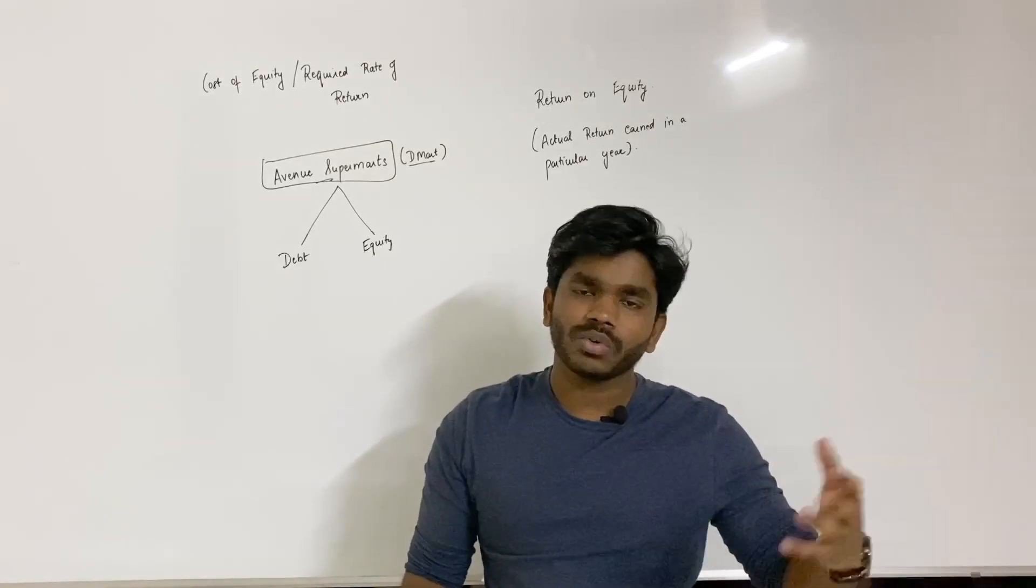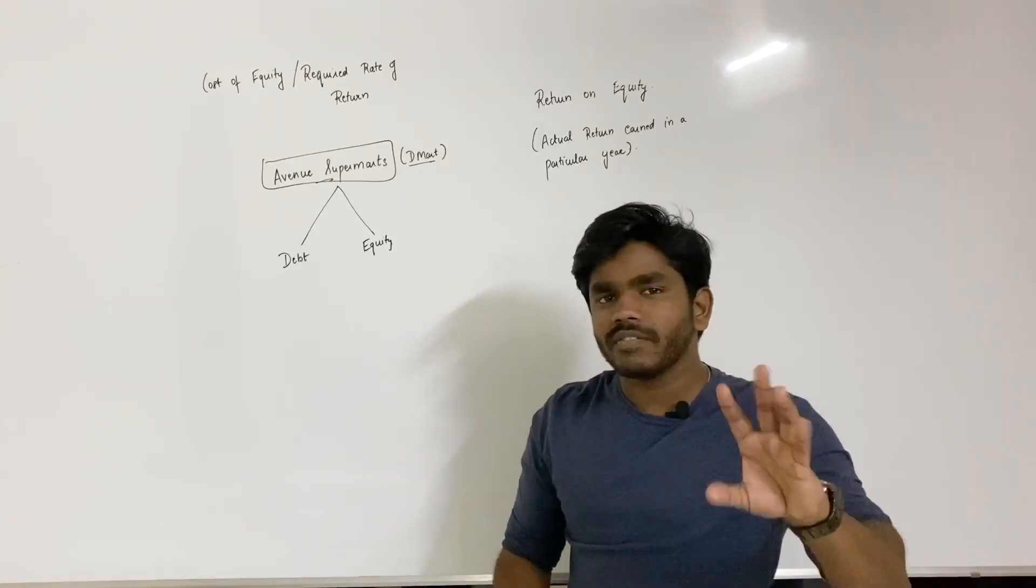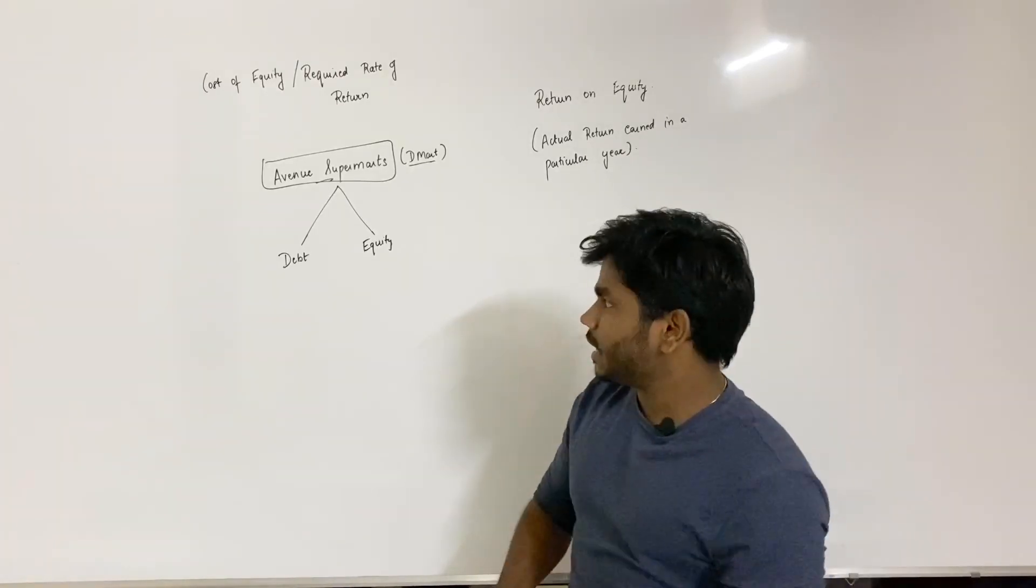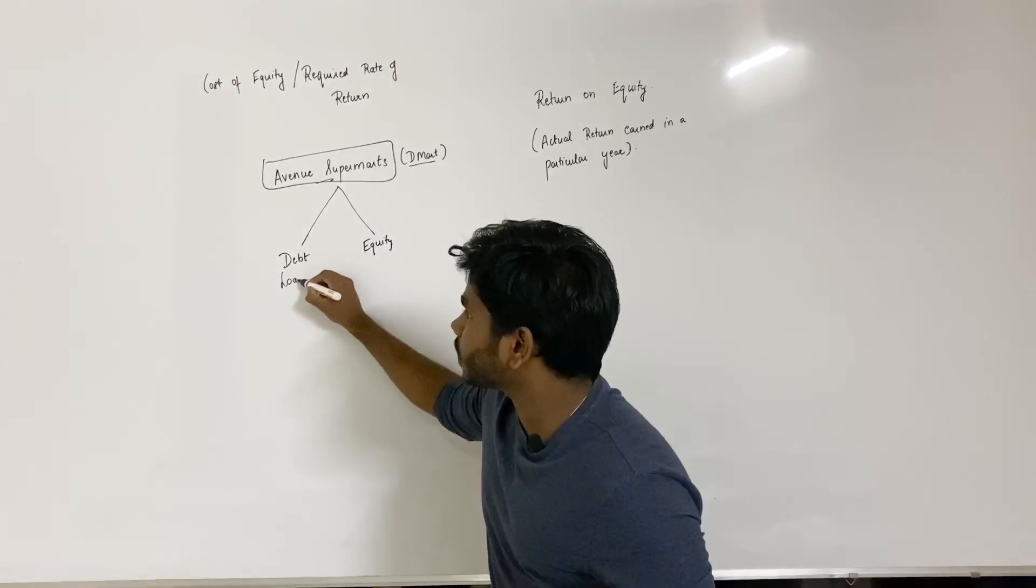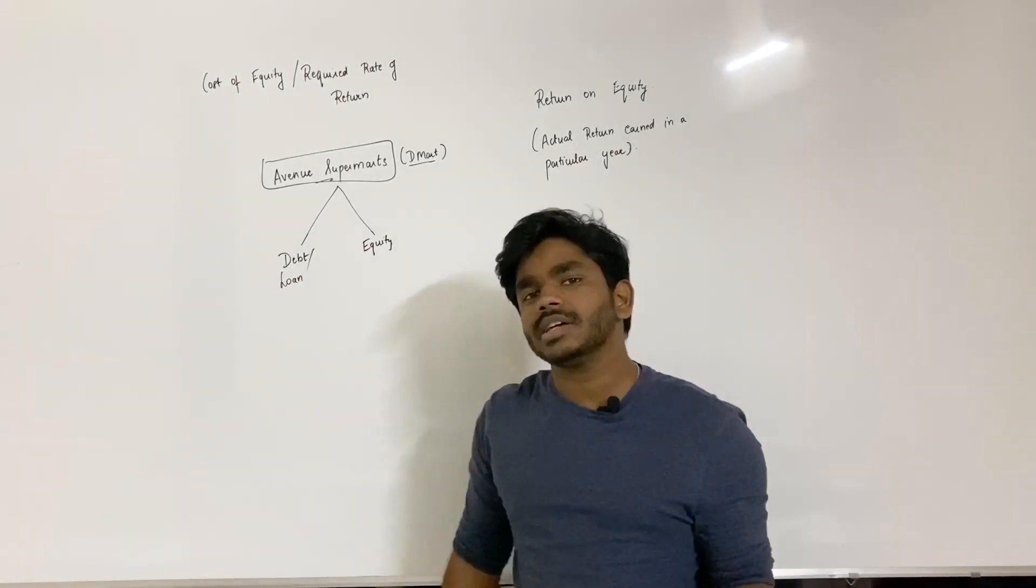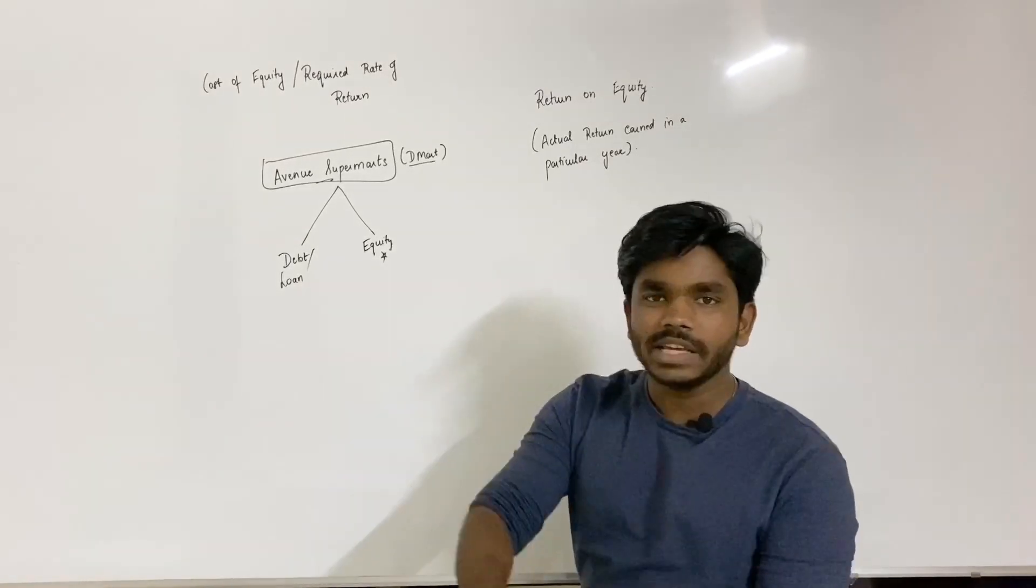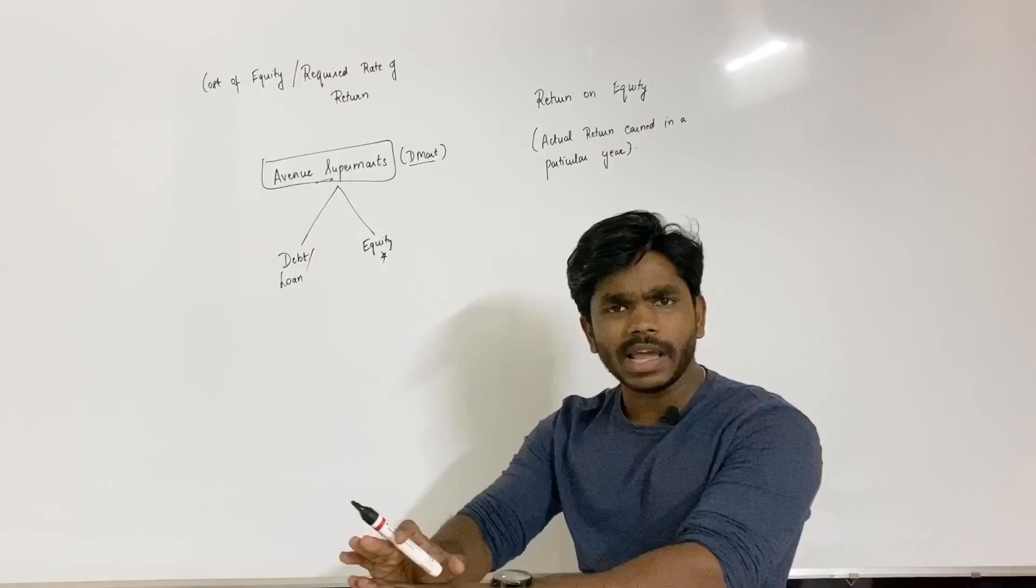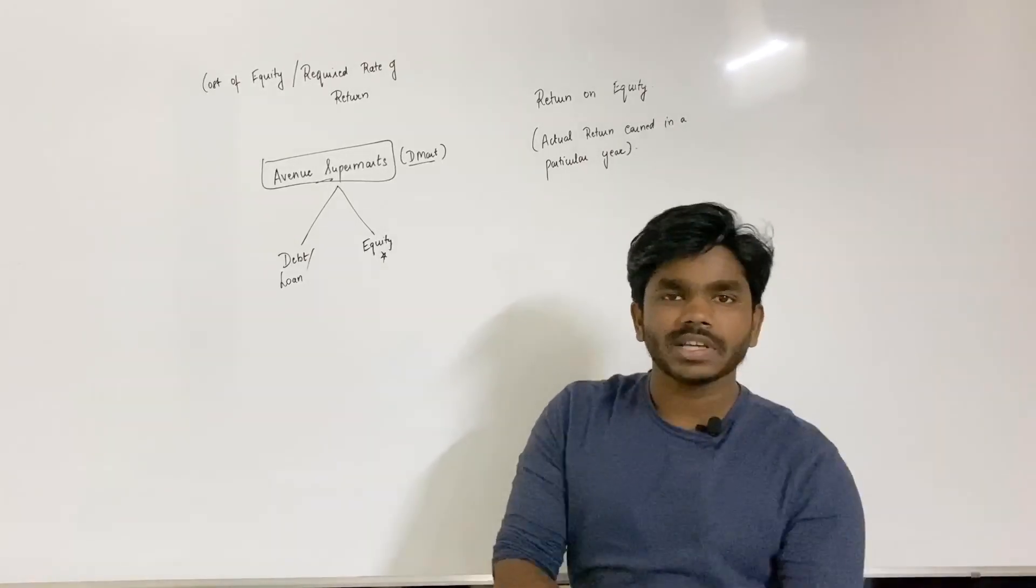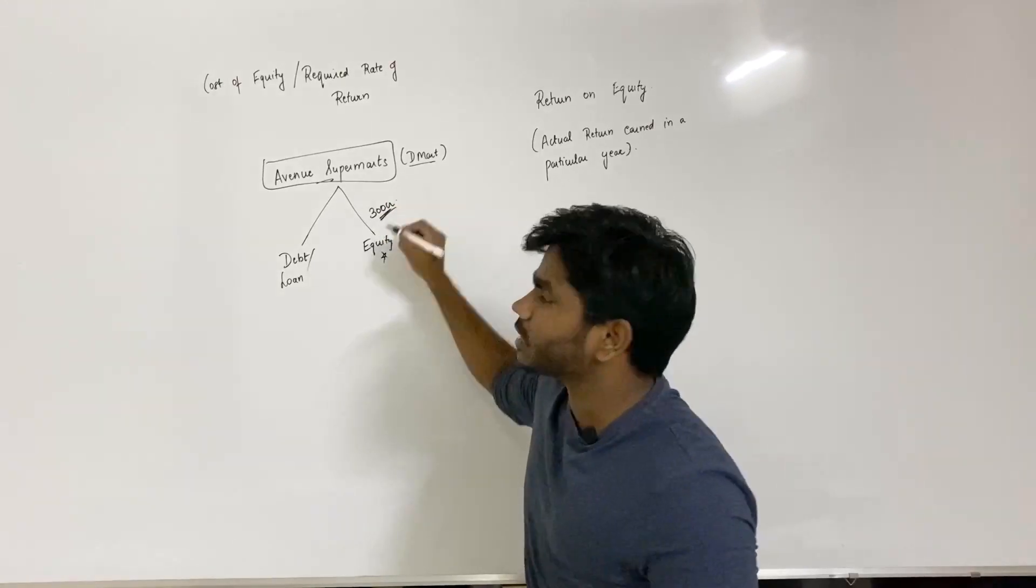If you have a retail investor or an institutional investor, you can raise 200. In order to do it, we have to pay. One is loans and debt, the other is equity. Now, we will assume that we need to raise 300 crores. We need to pay loans and equity investors to raise 300 crores.